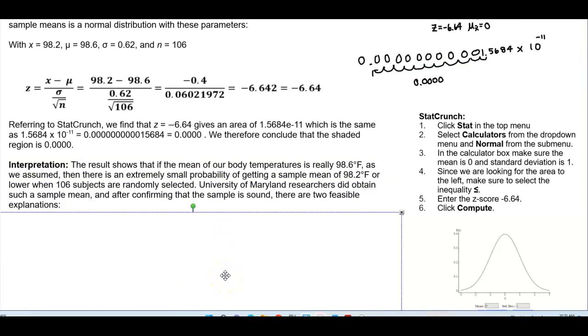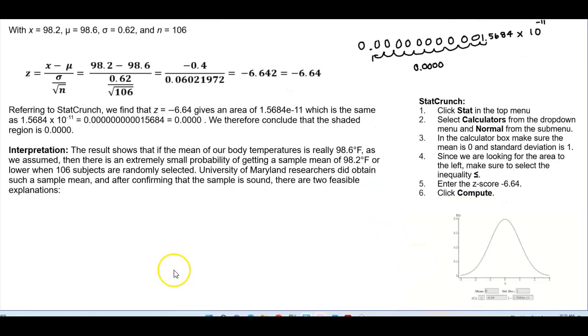Now, the interpretation. The results show that if the mean of our body temperatures is really 98.6 degrees Fahrenheit, as we assumed, then there is an extremely small probability of getting a sample mean of 98.2 degrees Fahrenheit, or lower, when 106 subjects are randomly selected. The University of Maryland researchers did obtain such a sample mean, and after confirming that the sample is sound, there are two feasible explanations.